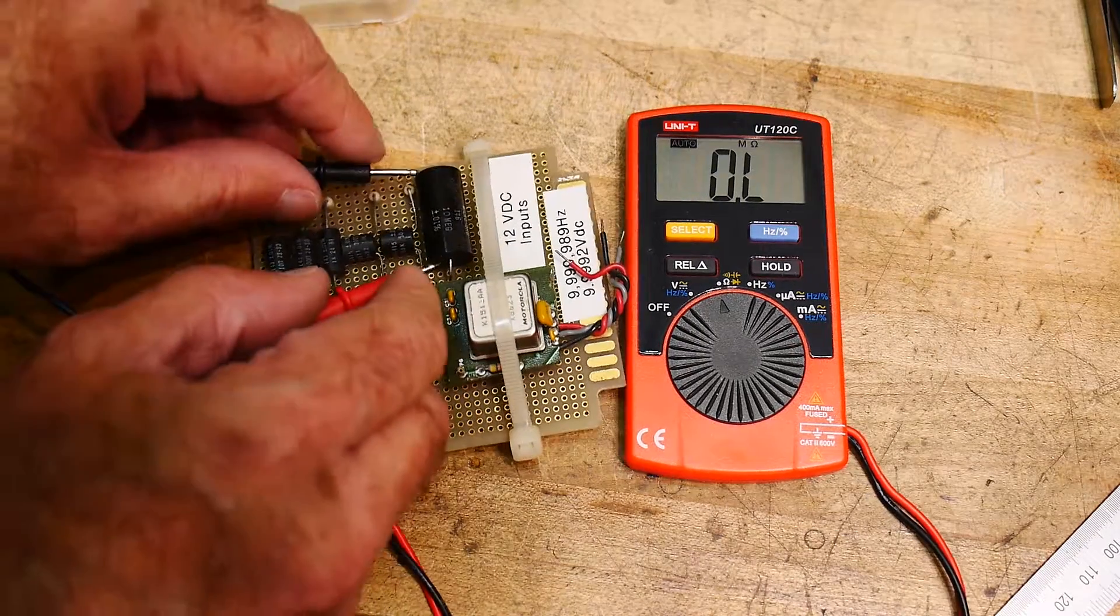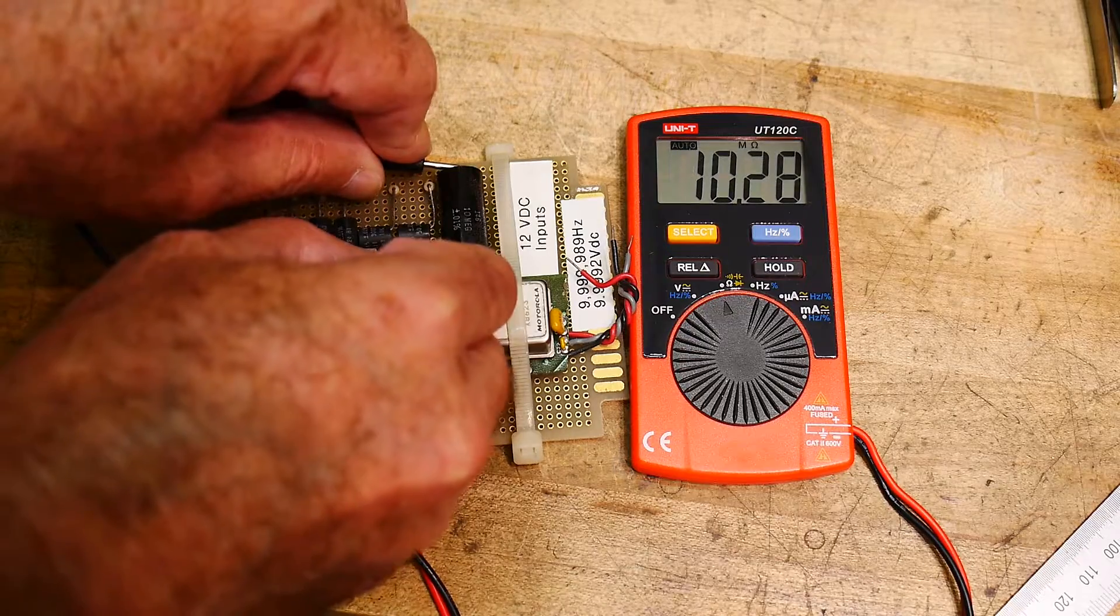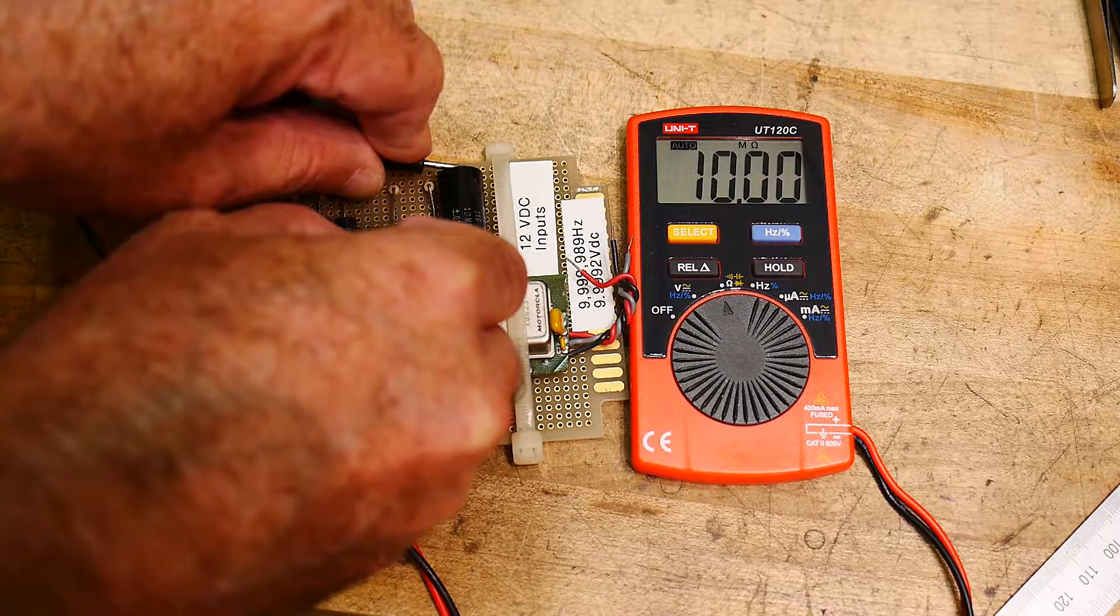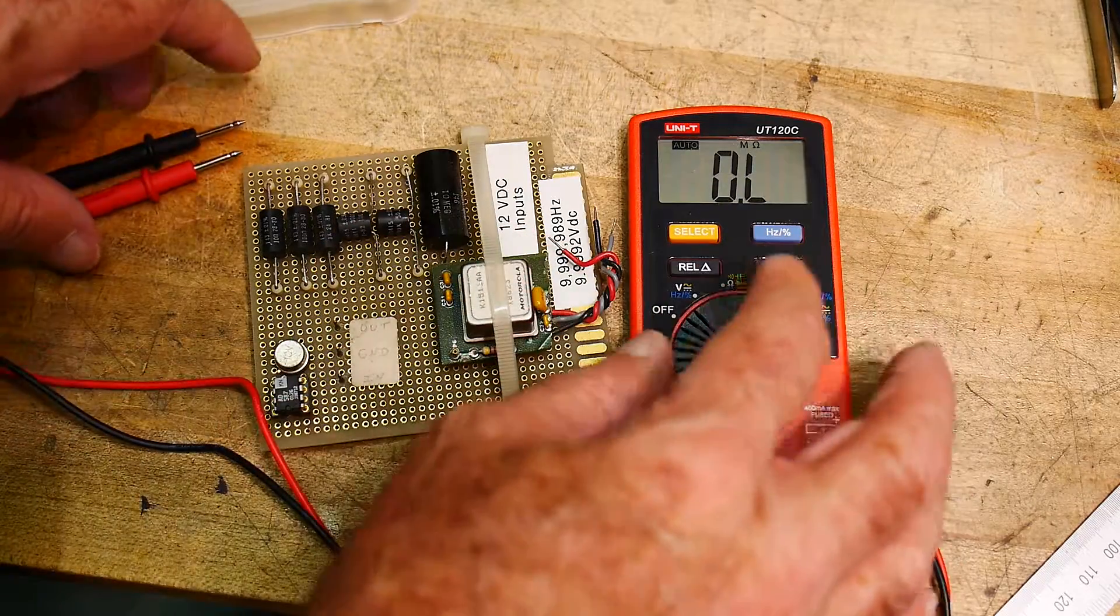So there you go. Wait a minute, is that 10 Megs? Oh yeah, this is 10 Megs. I don't have a 1 Meg I think. Yeah, 10.00, very good. So it's very accurate for resistance.